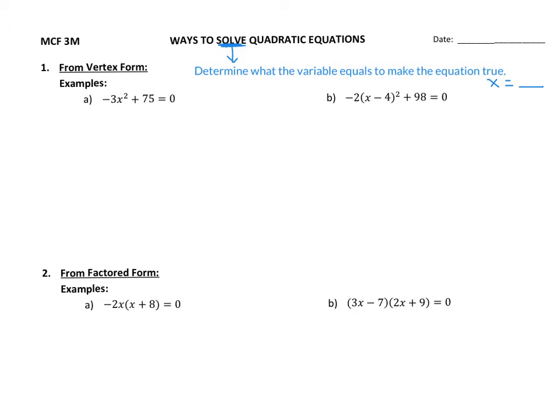So there's three different scenarios that we're going to look at. If we have the vertex form of an equation, so the vertex form here, what we can do for that is we can isolate. We can just get x by itself by doing BEDMAS backwards.